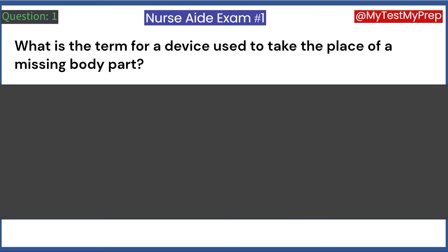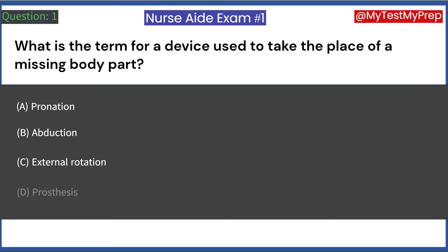What is the term for a device used to take the place of a missing body part? A. Pronation. B. Abduction. C. External rotation. D. Prosthesis. Answer: D. Prosthesis.